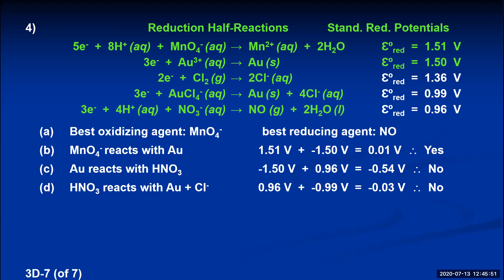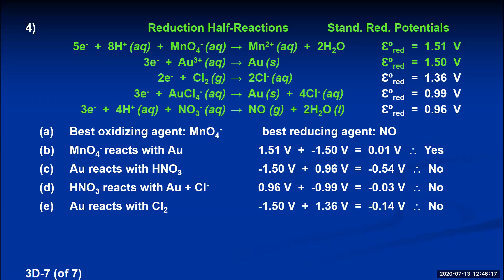Part E: will metallic gold reduce pure chlorine in the presence of water? Translating: will gold react with chlorine? Gold is in the second reaction on the product side; reverse it to put gold on the reactant side — voltage becomes negative 1.50. Chlorine is in the third reaction already on the reactant side — voltage stays 1.36. Adding those two gives a negative number, so this reaction will not occur. Metallic gold will not reduce pure chlorine gas in the presence of water.